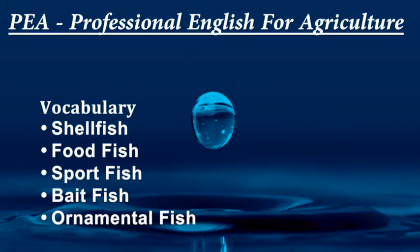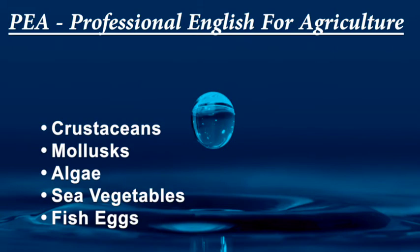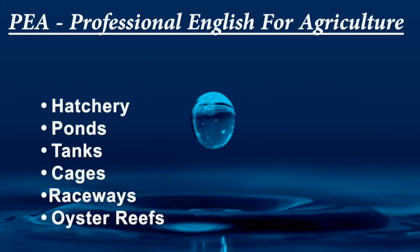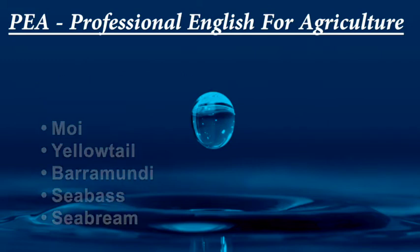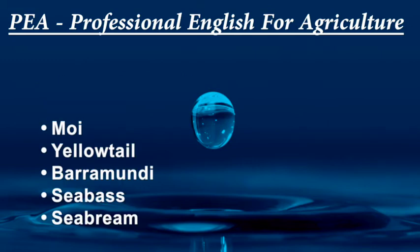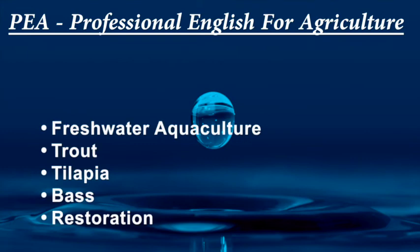Key vocabulary from this lesson includes: shellfish, food fish, sport fish, bait fish, ornamental fish, crustaceans, mollusks, algae, sea vegetables, fish eggs, hatchery, ponds, tanks, cages, raceways, oyster reefs, marine aquaculture, oysters, clams, mussels, shrimp, salmon, cod, yellowtail, barramundi, sea bass, sea bream, freshwater aquaculture, trout, tilapia, and bass.